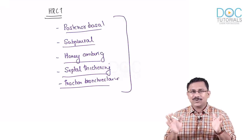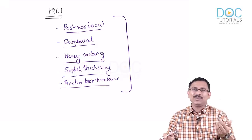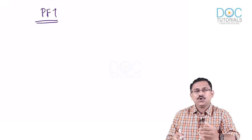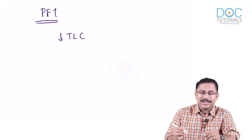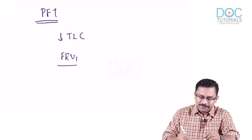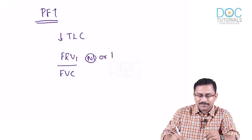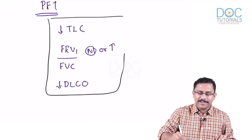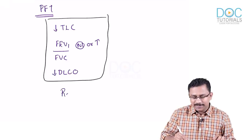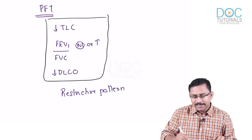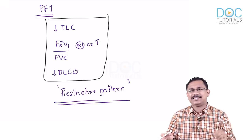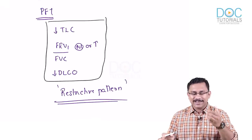Keep these HRCT points in mind; we will compare IPF with other entities. In addition to chest X-ray and HRCT, you can go for spirometry — pulmonary function testing. PFT shows decreased total lung capacity, FEV1/FVC ratio that is normal or increased, and decreased DLCO — a classical restrictive pattern. This restrictive pattern applies to all ILDs; IPF is the prototype.